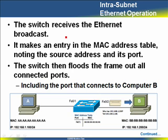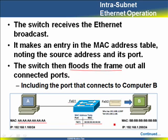The switch receives this message and takes the traffic from Computer A in through its port. Since there were no entries in the MAC address table, it learns that Computer A's MAC address is located off port FastEthernet0/1 and adds that to its MAC address table. Because this is a broadcast message, the switch floods the frame out all connected ports — here that's just FastEthernet0/2. If this were a 24-port switch, all other 23 ports would receive this broadcast, including the one that connects to Computer B. The switch forwards the message out to Computer B.